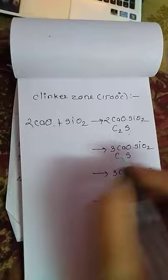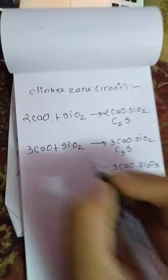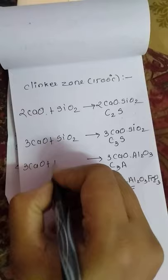Three molecules of CaO plus one molecule of SiO2 forms C3S. Three molecules of CaO plus Al2O3 forms C3A.